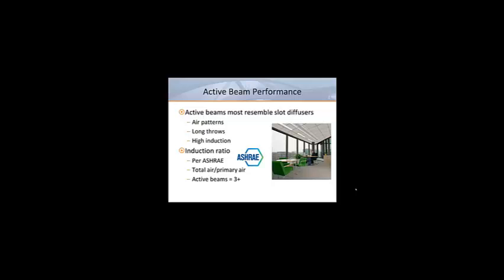According to ASHRAE, the induction ratio of any air outlet is equal to the total supply air volume divided by the primary air volume. So if an active beam was supplied with 500 CFM of primary air, but the total supply air in the discharge jet was 1,000 CFM, it would have an induction ratio of 2. The good news is that many active beams available today have induction ratios of 3, and this is likely to rise through further innovations in nozzle or outlet design.